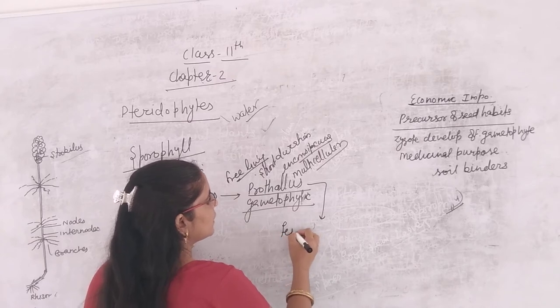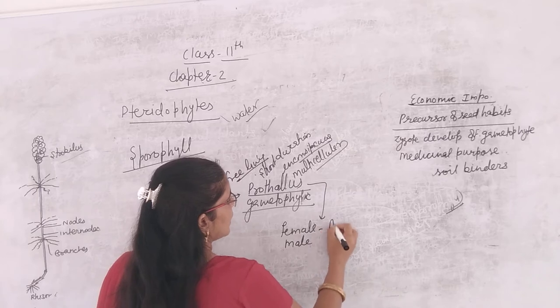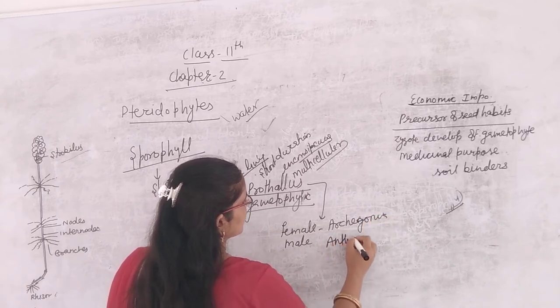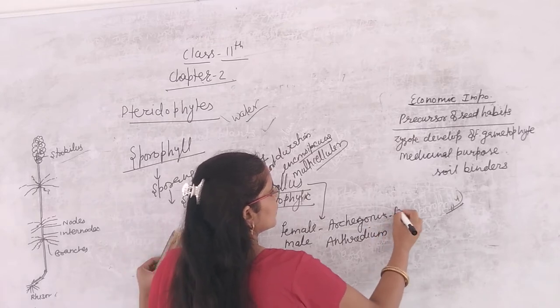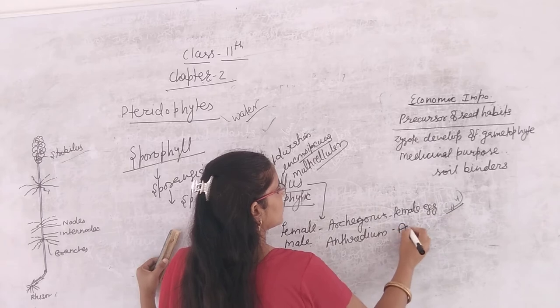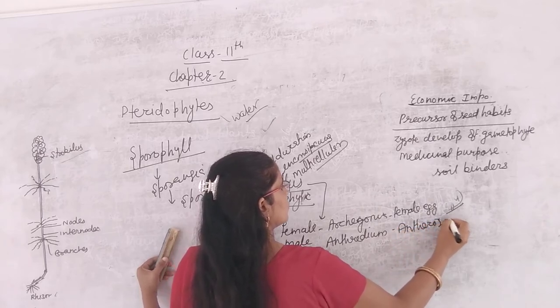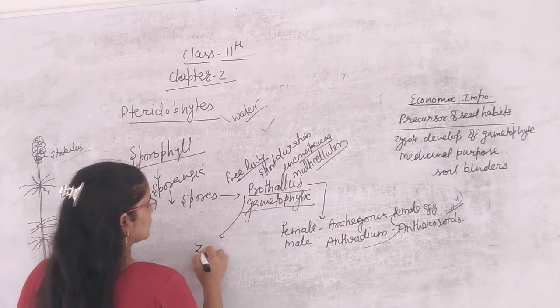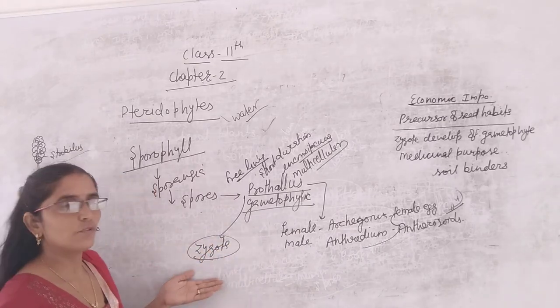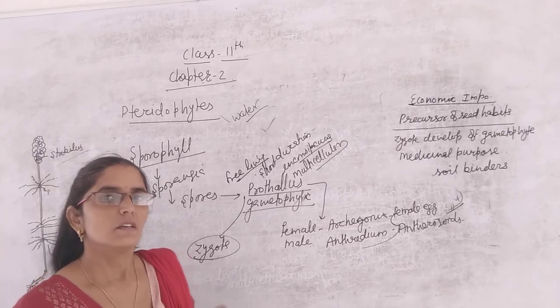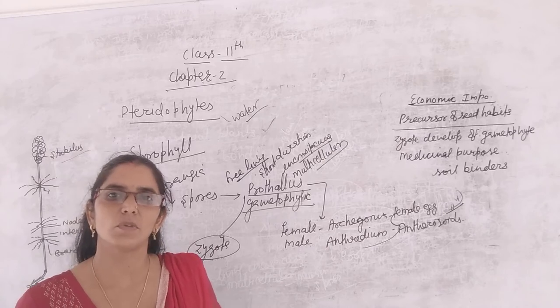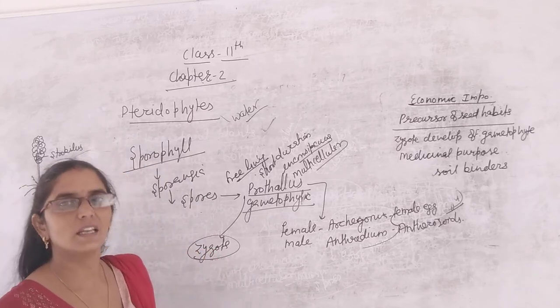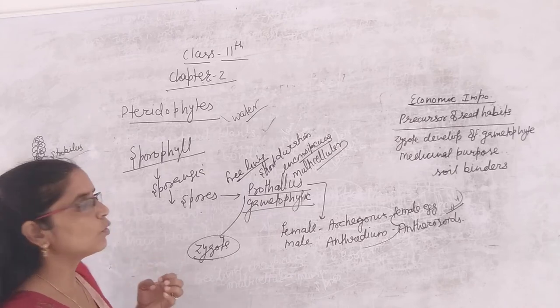Now the gametophyte bears male and female sex organs which we call archegonium and antheridium. This is what we call archegonium where female eggs are produced and antherozoids are produced in antheridium. Water bodies help them get fused. When they get fused they form zygote. The fusion of male and female gametes - sometimes these gametes are homosporous and sometimes these are heterosporous. Mostly the pteridophytes are homosporous gametes and some like Selaginella, Salvinia produce micro and megaspores and are heterosporous.